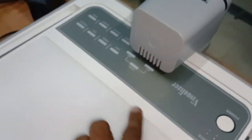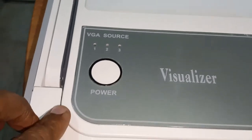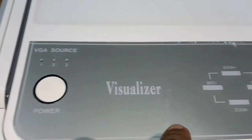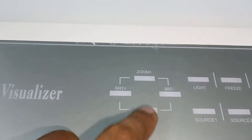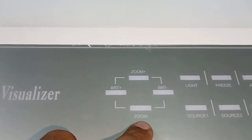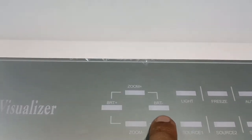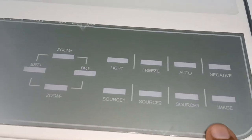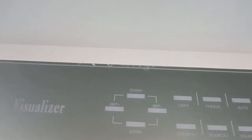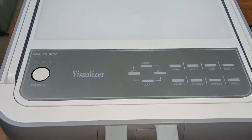This is the touch control area so that you can control the document visualizer. There is a power button, VGA source, and visualizer source. You can increase the zoom by tapping the zoom-plus button and decrease it with the zoom-minus button. You can increase the brightness by pressing the BRT-plus button and decrease the brightness using the BRT-minus button. There are also source one, source two, and source three options.